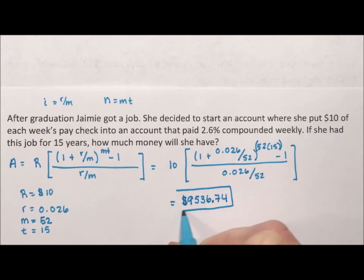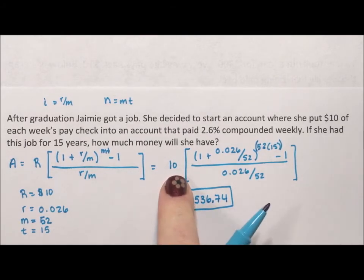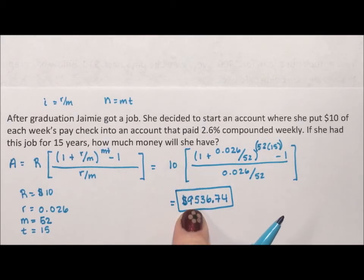Now, I'm always interested in how much did it cost Jamie to make $9,500. We see this $10 and think that's not a lot of money, and $9,000 is a lot of money. But if we figure she's putting away $10 a week, that's 52 times a year for 15 years. That means out of pocket to make this $9,000, she's actually paying $7,800.